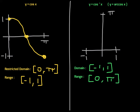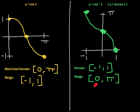Swapping coordinates: the point (0, 1) on cosine becomes (1, 0) on arc cosine; the point (π/2, 0) becomes (0, π/2); and the point (π, −1) becomes (−1, π). The graph is symmetric with respect to y = x. The range for arc cosine is zero to pi — make sure you have that correct.